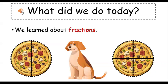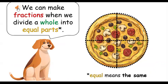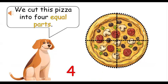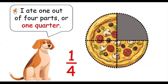What did we do today? We learned about fractions. We can make fractions when we divide a whole into equal parts — equal means the same. We cut this pizza into four equal parts. I ate one out of four parts, or one quarter.